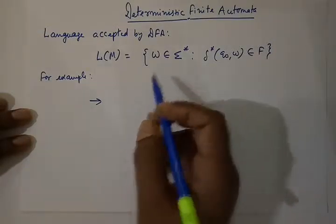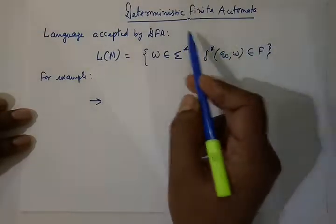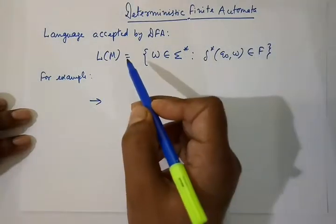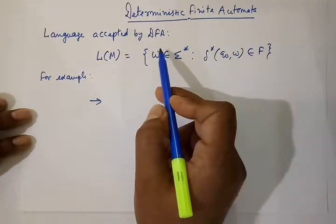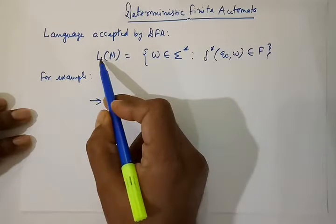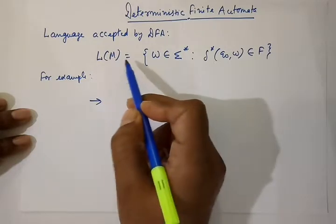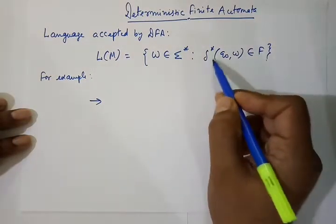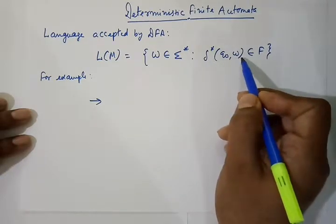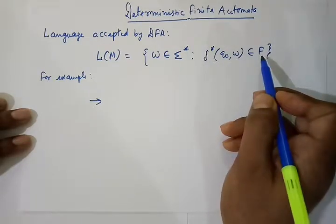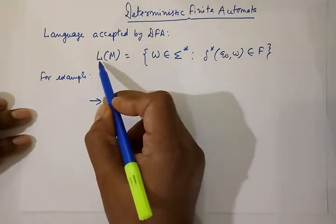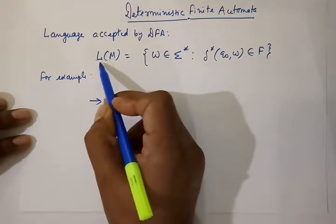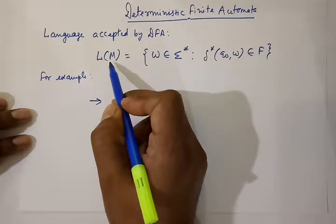In this lecture we are going to discuss some examples of DFA. The language accepted by a DFA can be defined as L(M) equal to the set of W belonging to sigma star, such that delta star of Q0 and W belongs to F. This means L is our language, M is the DFA, so it becomes the language accepted by DFA M.